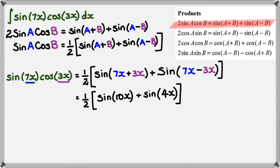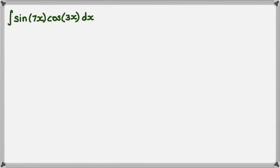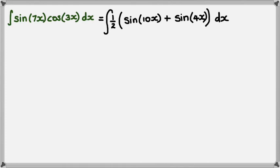Now that we've separated them into two separate things, we can integrate. Here we have sin(7x)cos(3x), which equals a half multiplied by sin(10x) + sin(4x). Don't forget the integral sign. We can take the half out of the integral sign because it's a constant, so we have a half times the integral of sin(10x) + sin(4x)dx.